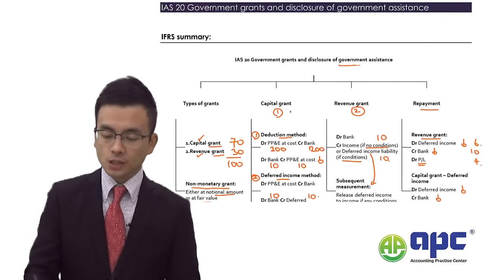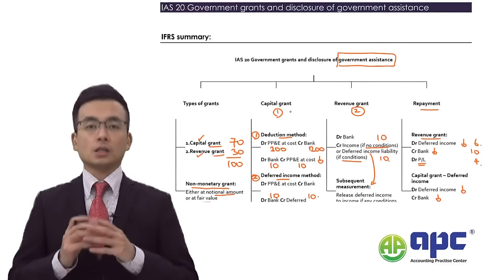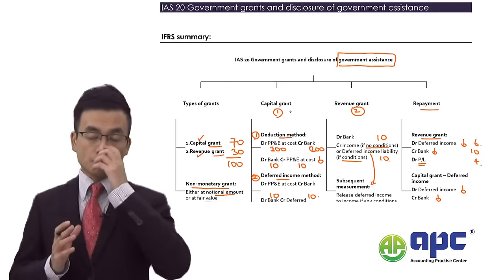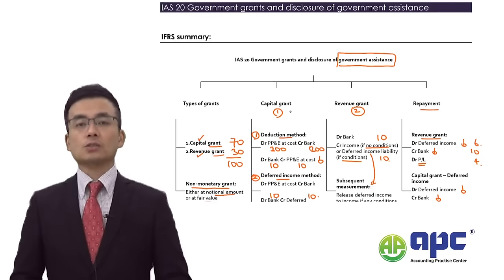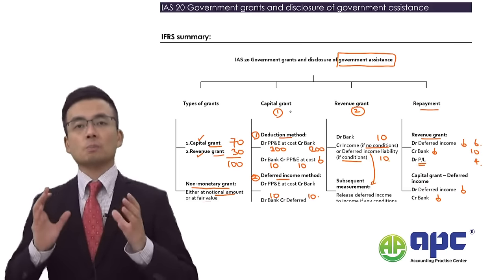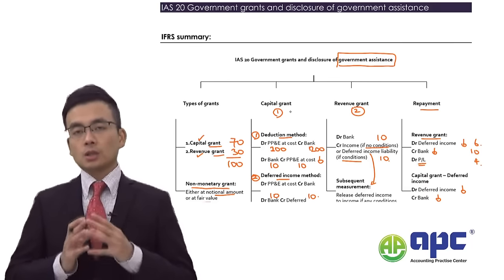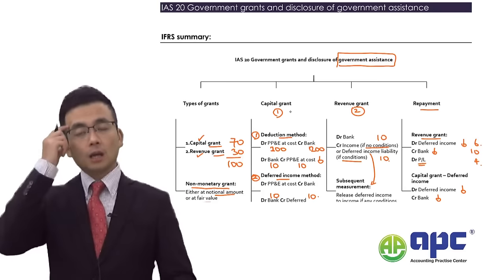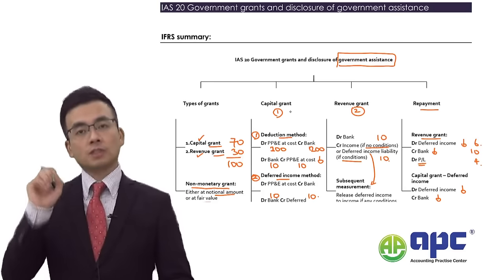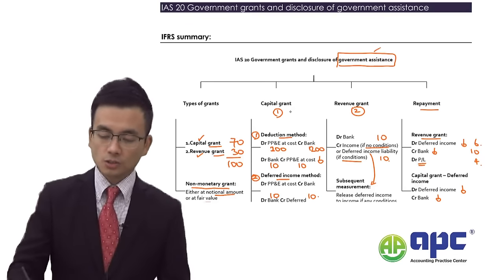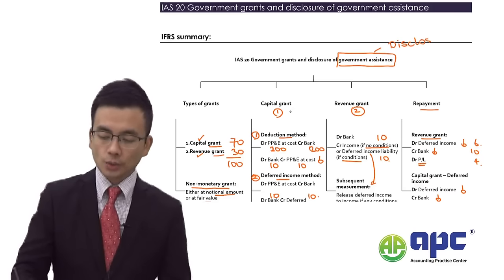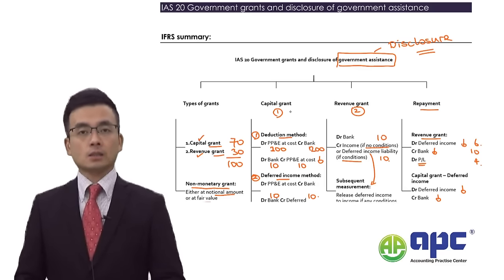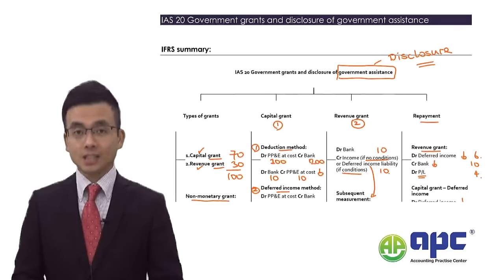Finally, for government assistance — where the government provides non-cash help such as media coverage or assigning government staff to assist with marketing or R&D — no direct cash is given. This falls into the category of government assistance. No journal entries are required, but you must disclose that fact in the financial statements in your annual report.